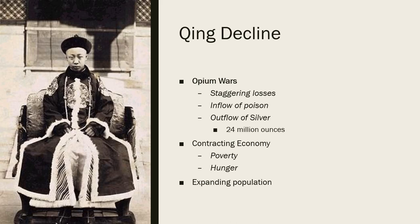The opium wars left staggering losses — not only military, but psychological, cultural, and economic blows. Opium flooded into Chinese markets, and a lot of the silver accumulated over hundreds of years began to drain out of China, assisted by reparations forced upon China amounting to 24 million ounces — equivalent to roughly 19 billion dollars today. This caused a contracting economy, more competition for resources, poverty, and hunger.